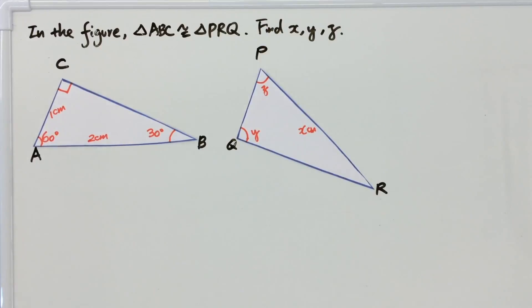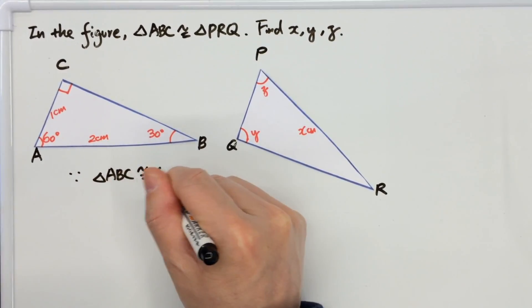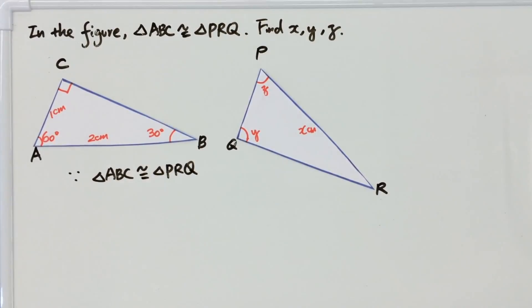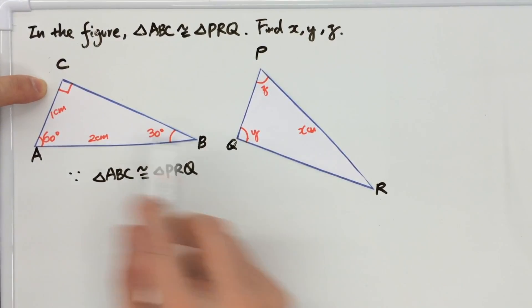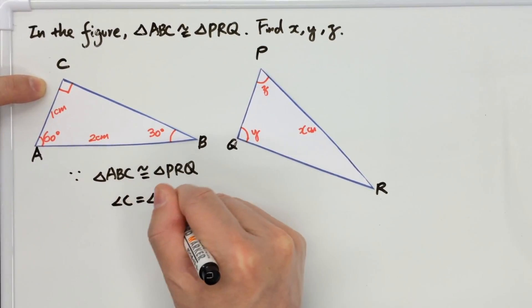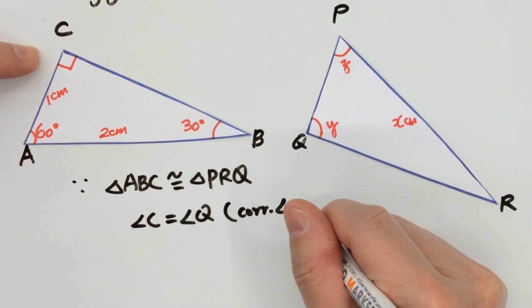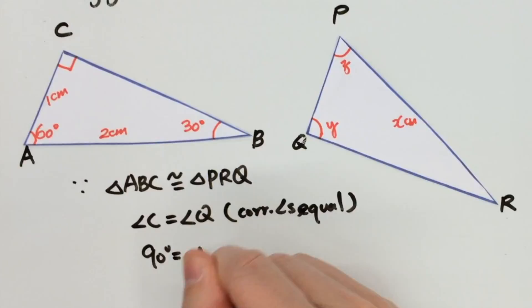And now we can write down. Because triangle ABC is congruent to triangle PRQ, therefore, y will be equal to 90 degrees. Angle C equals to angle Q. Corresponding angles equal. Therefore, y equals to 90 degrees.